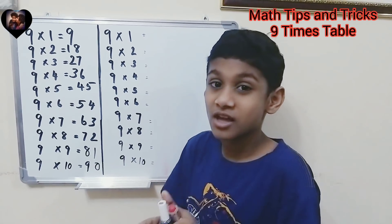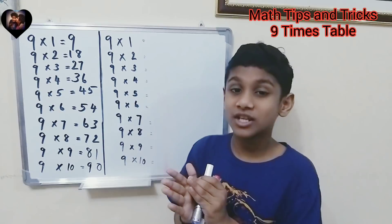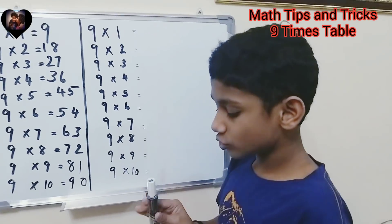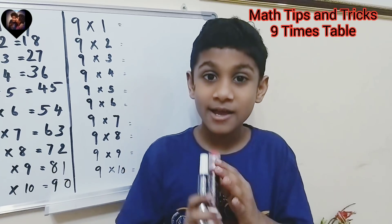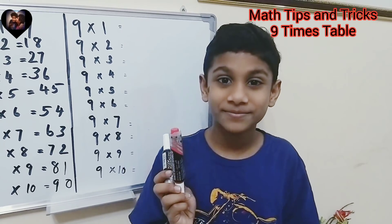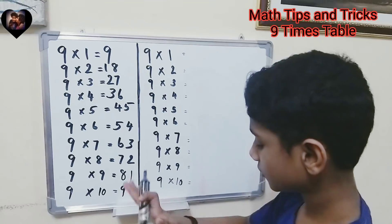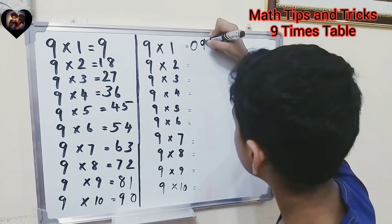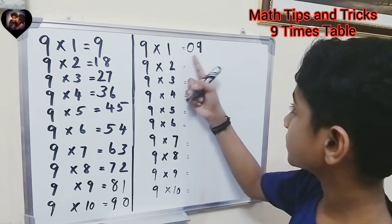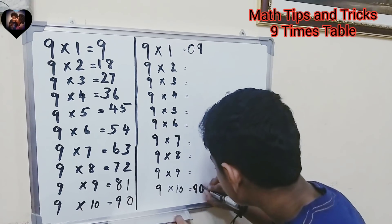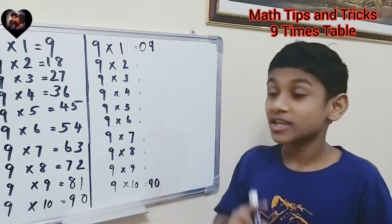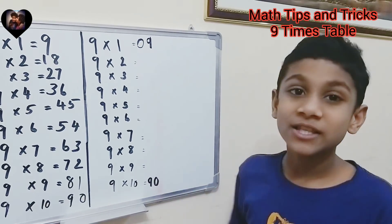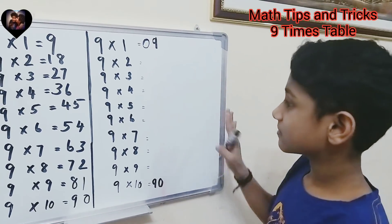Now let's go into the second trick. It's a bit more complicated, but once you understand how to do it perfectly it won't be complicated at all. I'll use black for this one. First things first — you write zero-nine. Now write the opposite which is nine-zero. You can see the pattern: nine times one equals nine, and nine times ten equals ninety.